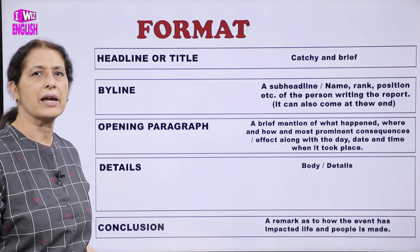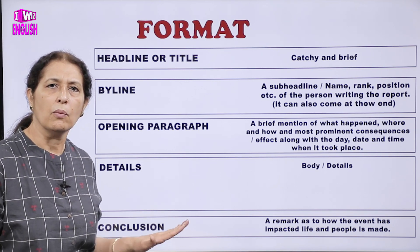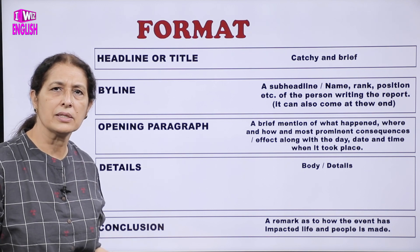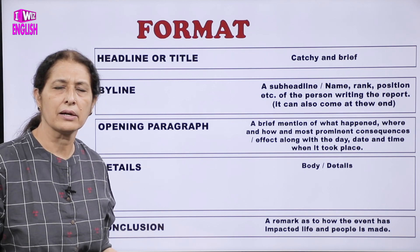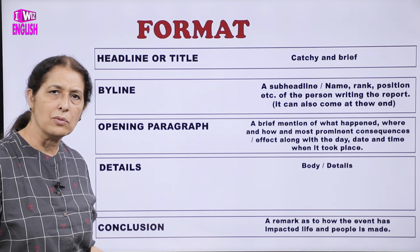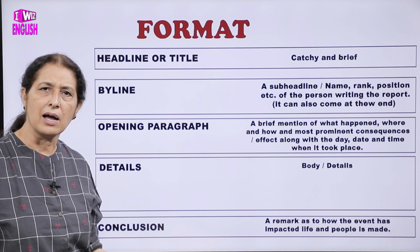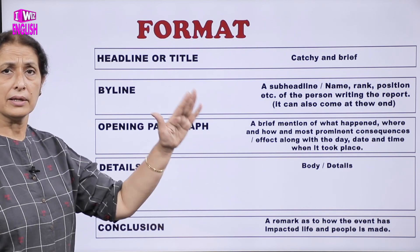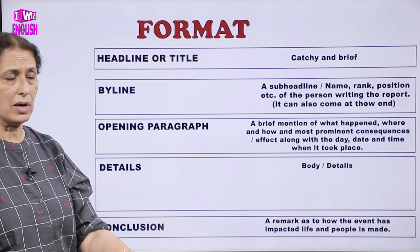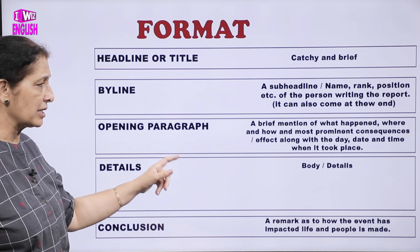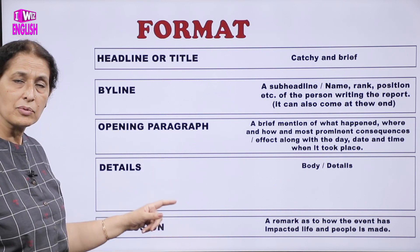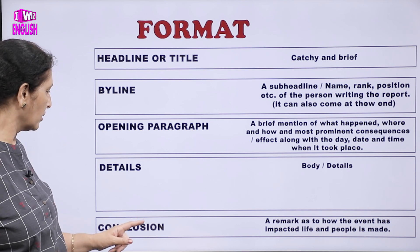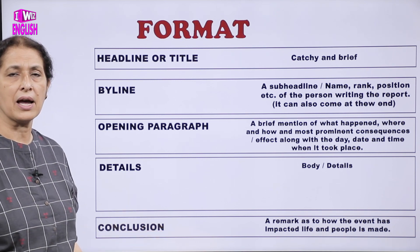So the first line has to be the answer to the questions: what, where, and when — kya hua, kahaan hua, kab hua. Uske baad kaise hua, aur phir uske details denge. Uske baad aur phir conclusion hai last mein.